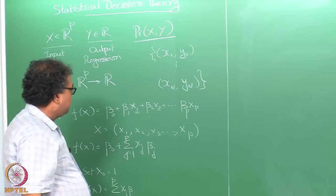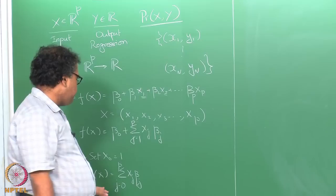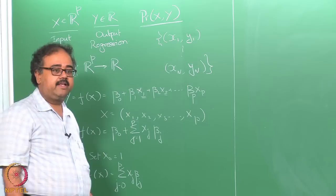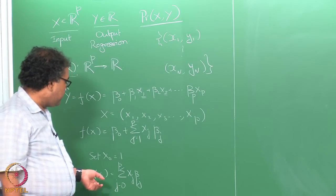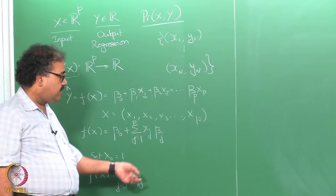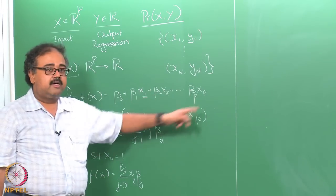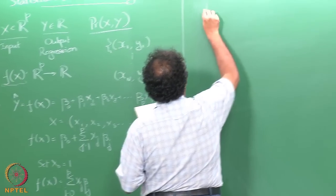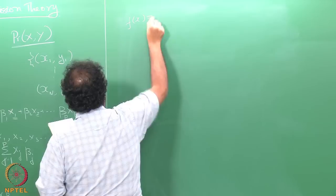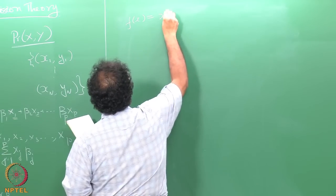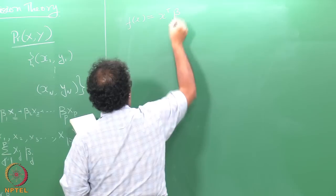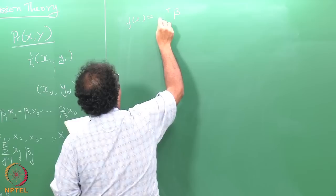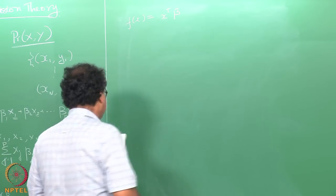Moving on, let us look at linear regression, where we make a significant assumption about the form of f: that f is linear in the inputs. Specifically, f(x) = β₁x₁ + β₂x₂ + … + βₚxₚ, or in vector notation, f(x) = xᵀβ.